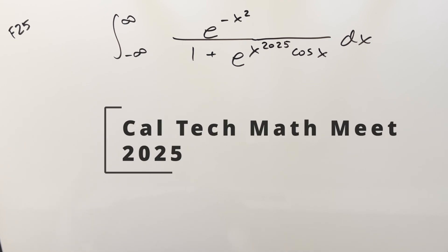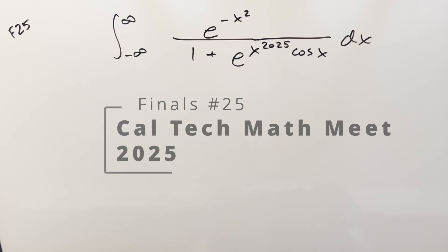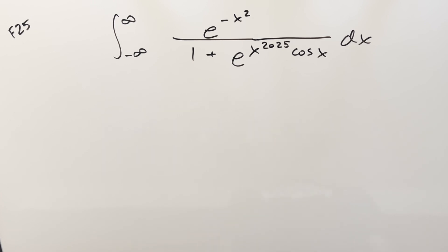We have another integral from Caltech Math Meet Finals, number 25. We have the integral from minus infinity to infinity of e to the minus x squared over 1 plus e to the x to the 2025, times cosine x, dx.